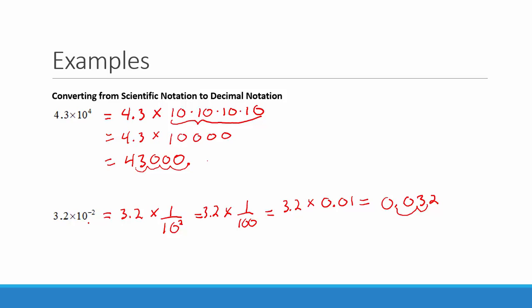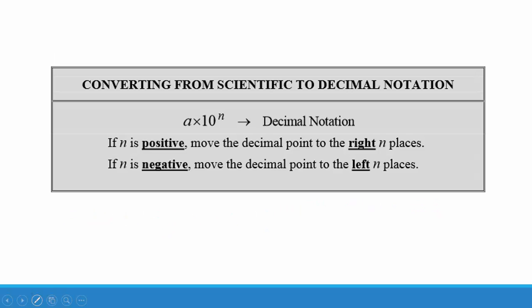So let's come up with some rules to do these problems more efficiently. Converting from scientific to decimal notation: if n, the exponent on the 10, is positive, move the decimal point to the right n places. If n is negative, move the decimal point to the left n places.